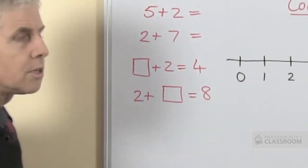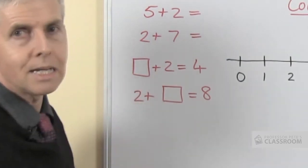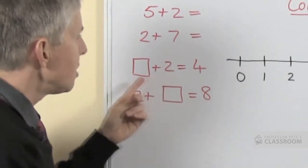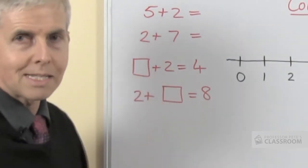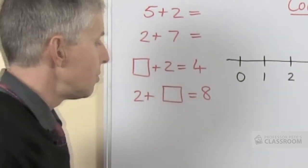With the latter 2 questions these are missing addend questions of course, where one of the 2 numbers being added is missing and we have the sum of the 2 numbers.